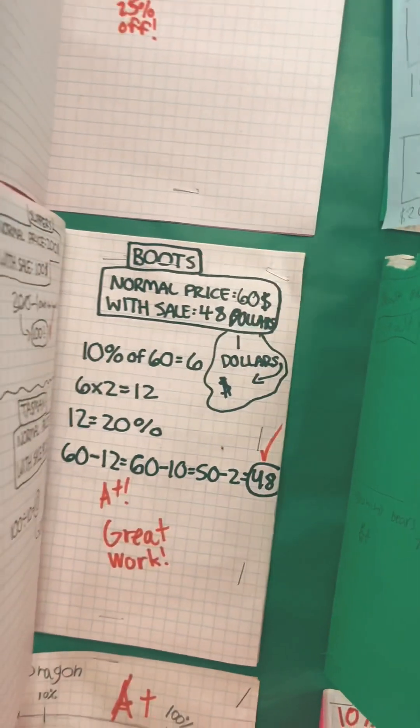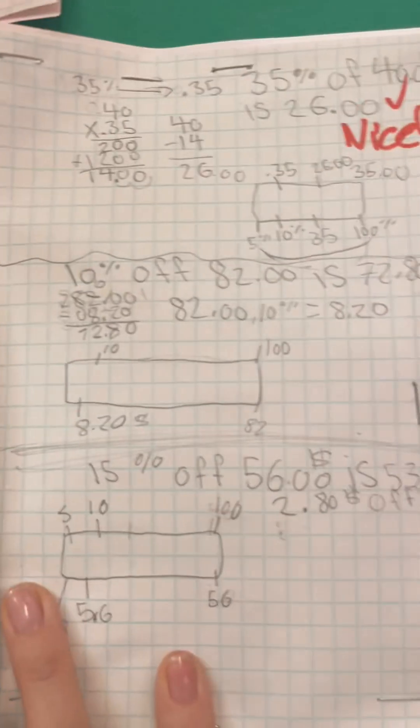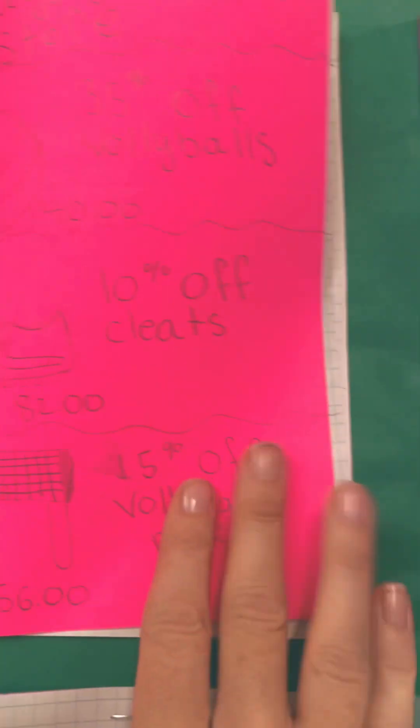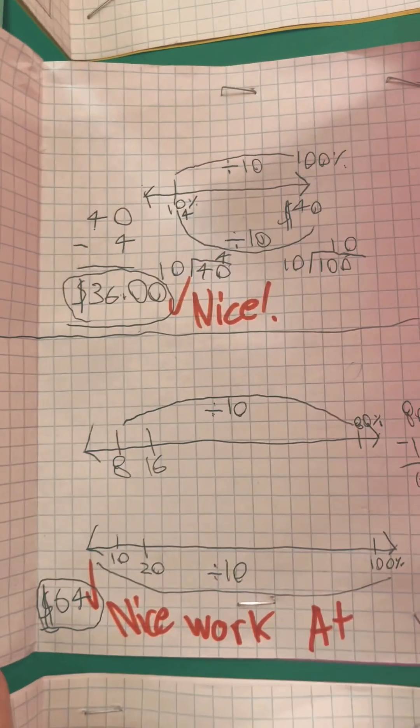Another student, let's take a look here, used a bar model and they had items on sports. Then we had another student using a number line.